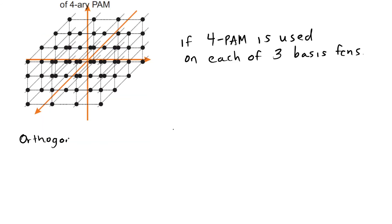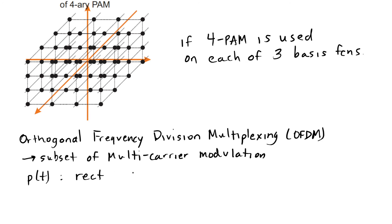Let's talk specifically about OFDM, orthogonal frequency division multiplexing, which is a subset of multi-carrier modulation. In particular, OFDM is going to use the pulse shape that is the rect function, 1 over square root of Ts between 0 and Ts.